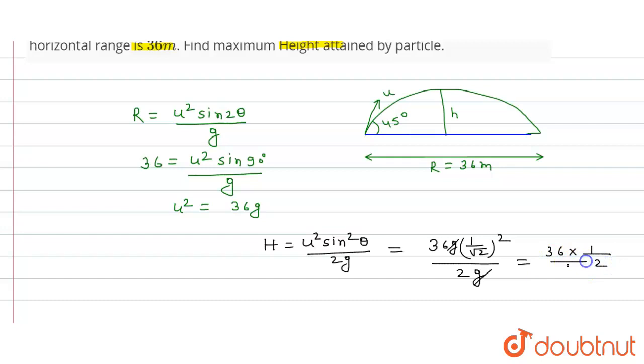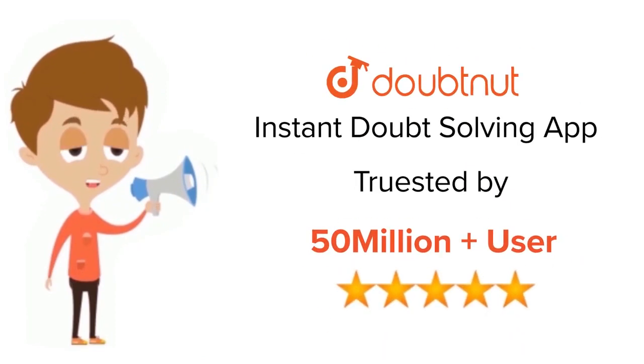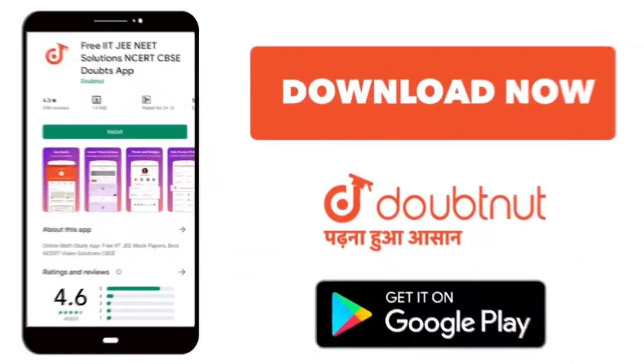So H height is equal to 36 upon 4, that is equal to 9 meters. So this will be our answer. Thank you. For class 6 to 12, IIT-JEE and NEET level, trusted by more than 5 crore students, download Doubtnet today.